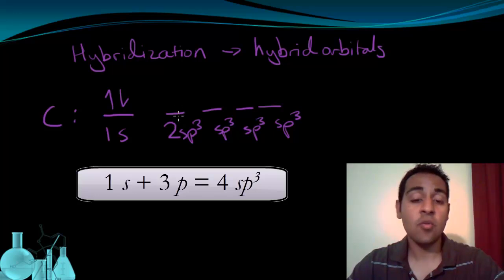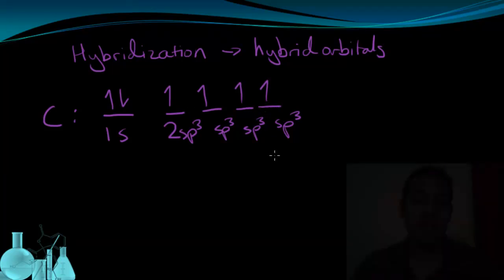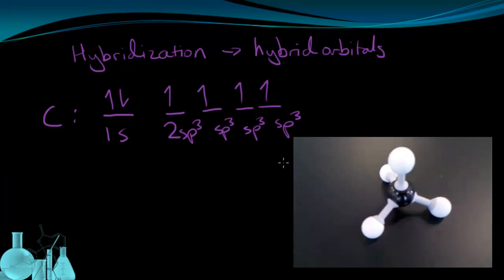So instead of having one orbital s and three p orbitals, we now have four equivalent orbitals. Each one is 75% p in character and 25% s, because it was one to three before. So we have 25% s and 75% p in these hybrid shaped orbitals. And now each one of these hybrid orbitals has one electron in it to form four equivalent bonds as we see in this model of methane.